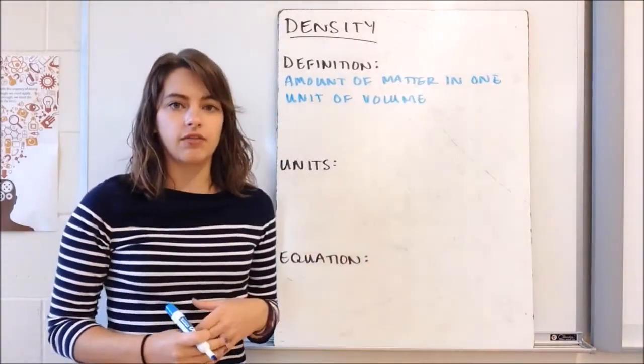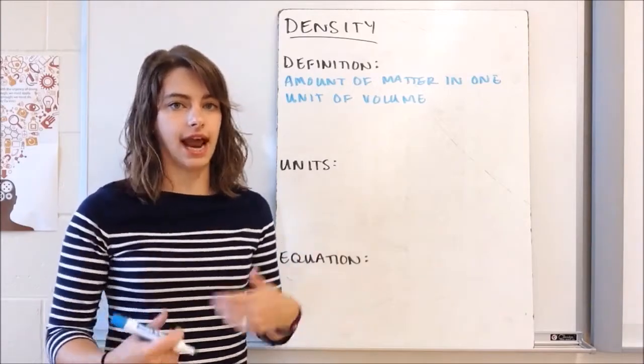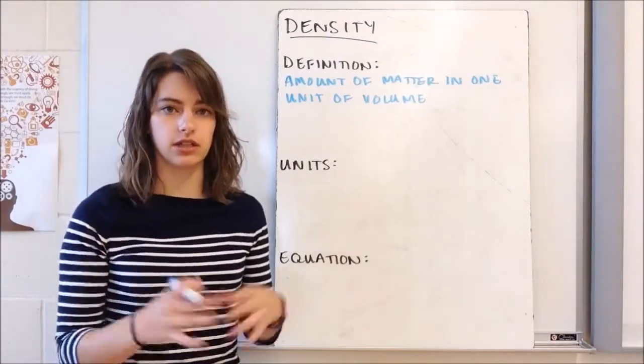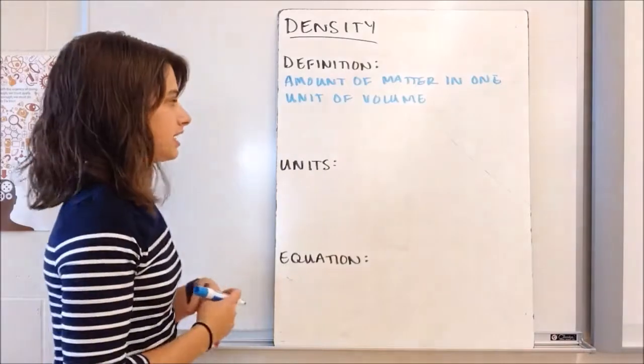If we have one milliliter, the density is how many grams it has in that one milliliter. The volume is always standard—it's in one unit of volume, and then it's a measure of how much mass or how much matter is in it.